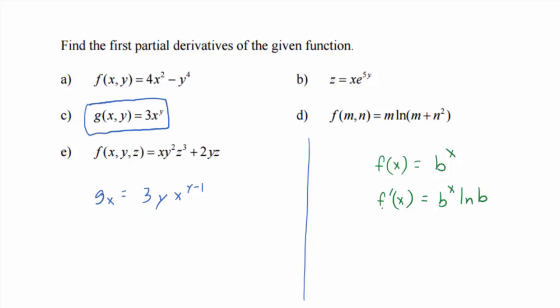So now we think of the base x as being constant. We have 3x to the y. We think of the base as constant, y as our variable. So what does this formula tell us? What would the partial of g with respect to y equal? x is acting like b. Go ahead and say it.